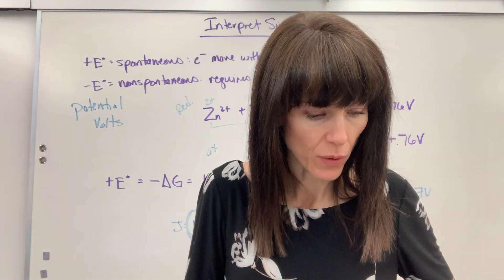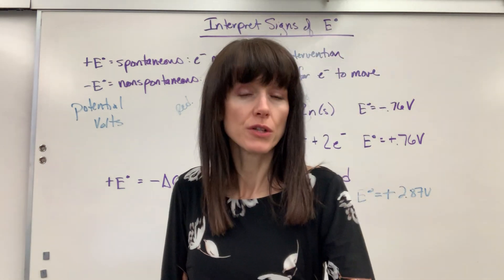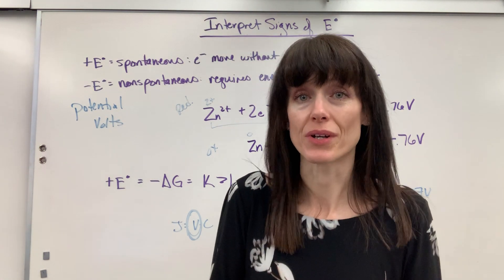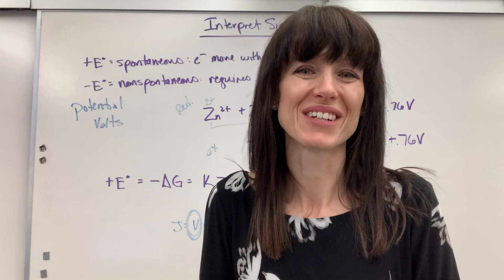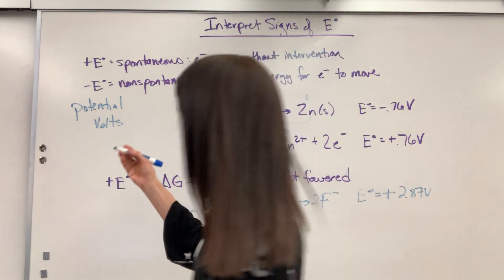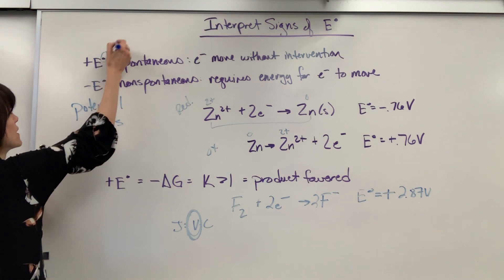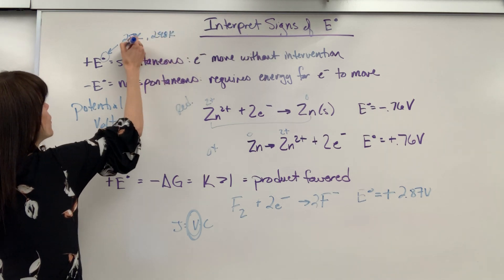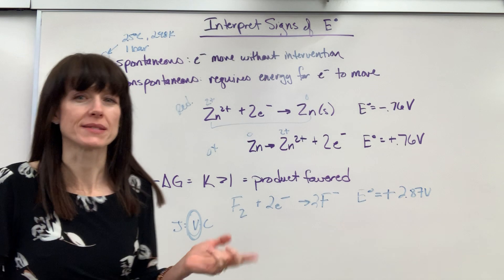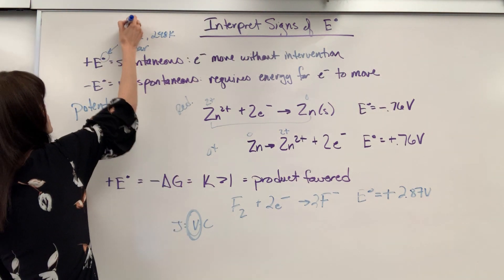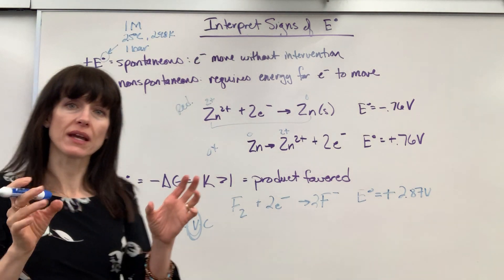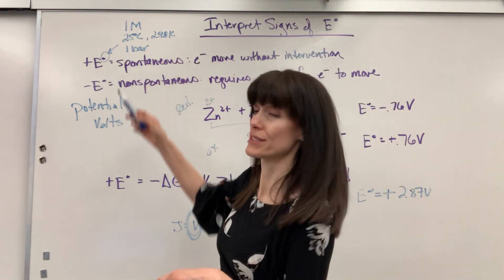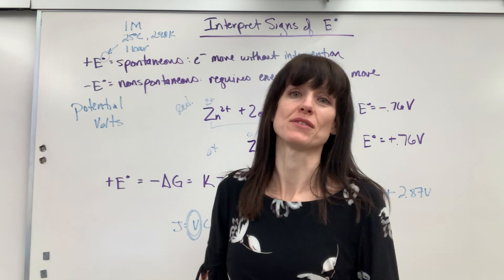There's one last thing I wanted to give you. When we are talking about standard conditions — just wanted to remind you — standard conditions for electrochemistry are similar to thermodynamics. Standard, because of the naught symbol, is going to be 25 degrees C, which is 298K, one bar — remember, 1.01 bars equals 1 ATM, those are really close — and one molar. That's significant, because when we have our half reactions in electrochemical cells, those concentrations at standard conditions have to be 1 molar.